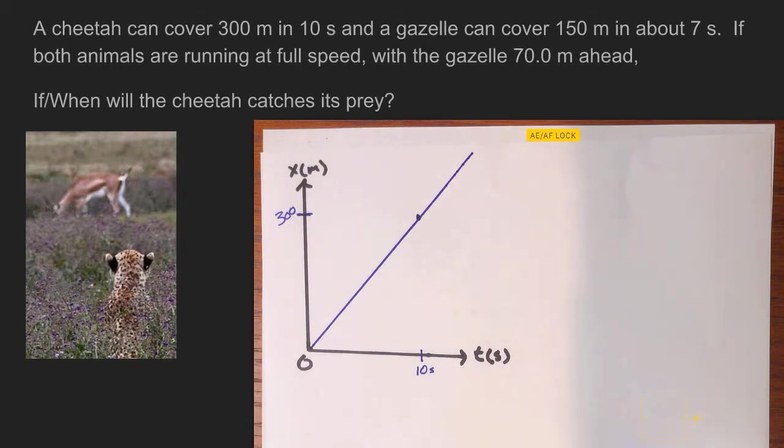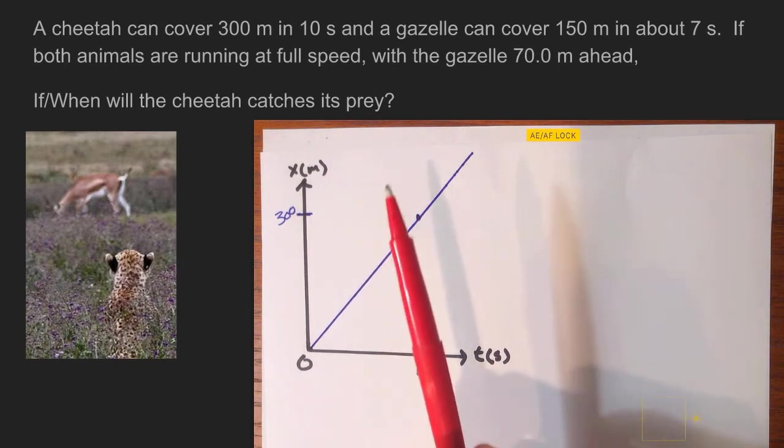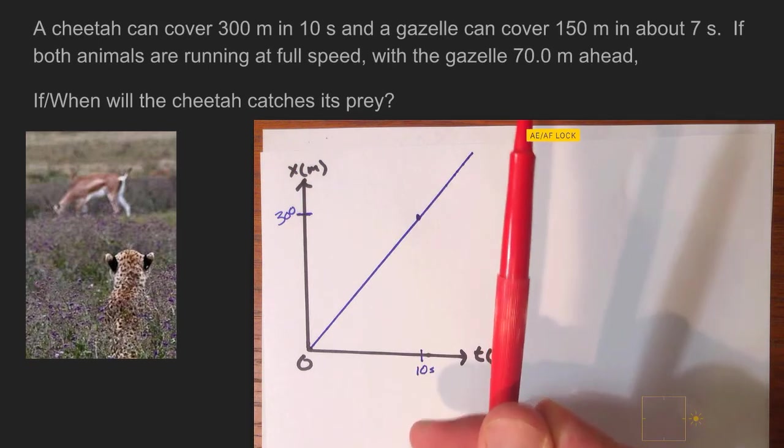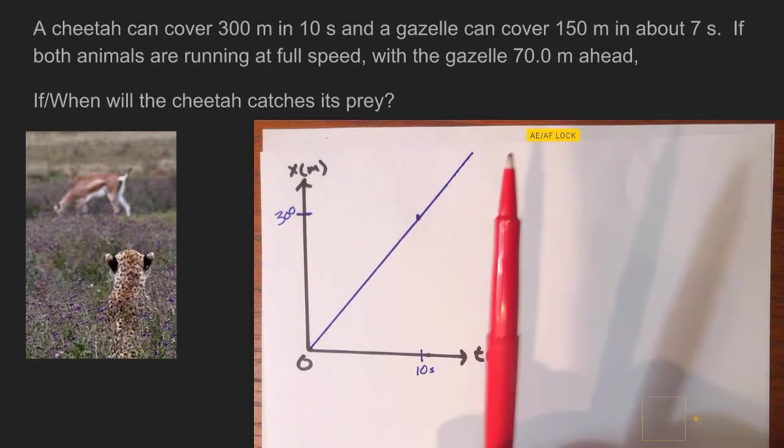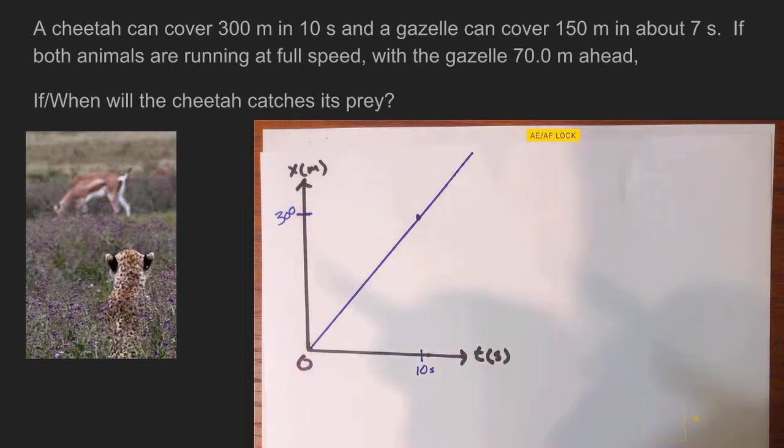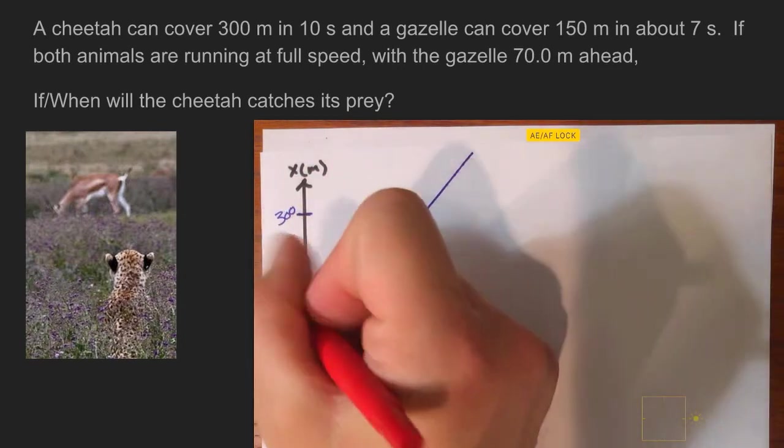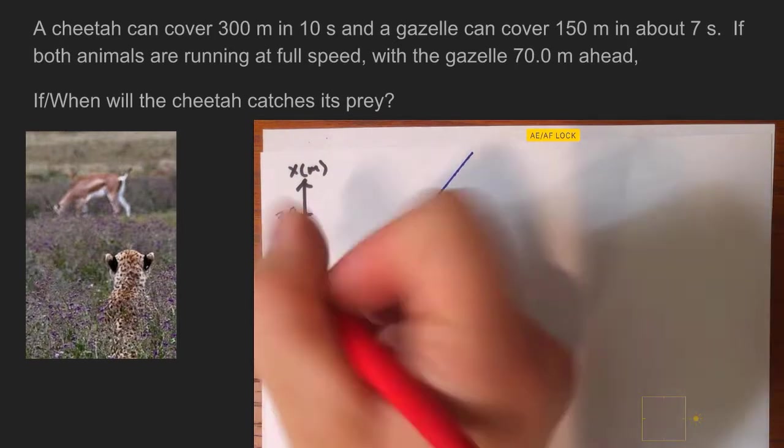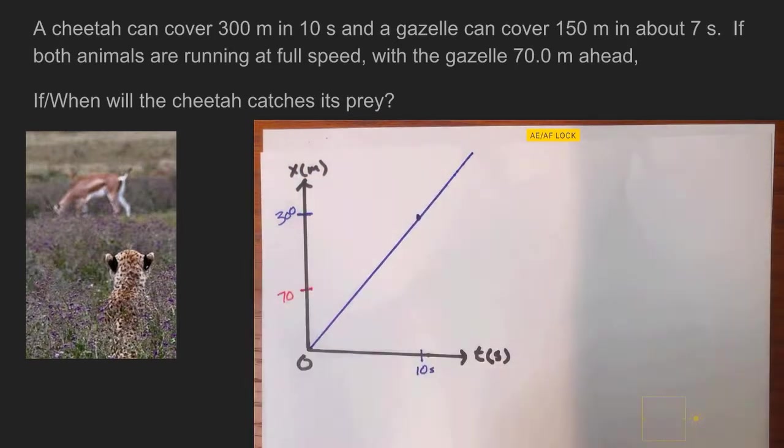Now let's take a look at the gazelle. I'm gonna use red here, red standing for the gazelle. The first thing we should note is that the gazelle does not start at zero like the cheetah did. The gazelle's got a head start of 70 meters, so the starting position for the gazelle is going to be 70 meters. So we go ahead and we put that on here. Don't worry about it being 100% to scale, just go ahead and pick a spot closer to the origin for that.